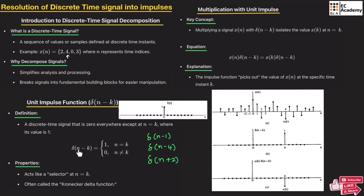Whenever we take delta(n − k) and substitute any value for k, this type of delta function is known as a Kronecker delta function.